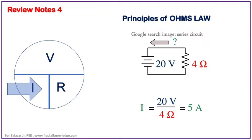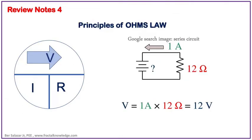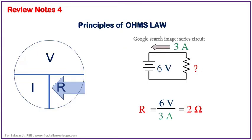Applying it is simple math. Given in the circuit is voltage and resistance as you can see from the screen — finding the current gives us 5 amperes. Another sample: given the resistance and current of the circuit, finding the voltage gives us 12 volts. Another sample: given the current and voltage source, finding the load resistance gives us 6 volts divided by 3 amperes, which is 2 ohms.